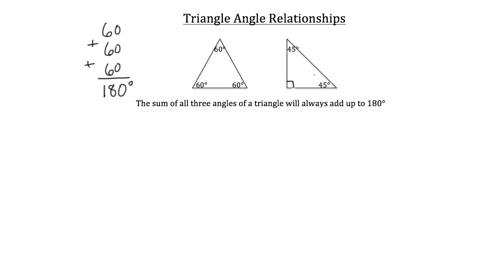Let's look at the triangle on the right. It's a right triangle. A right triangle has one 90 degree angle, denoted by this mark. And then it has two 45 degree angles. If you add those up together, you'll see that it adds up to be 180 degrees.